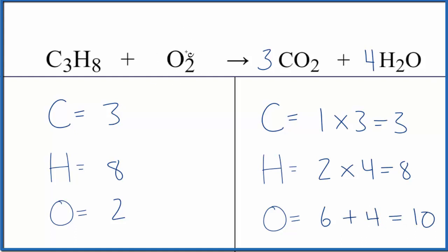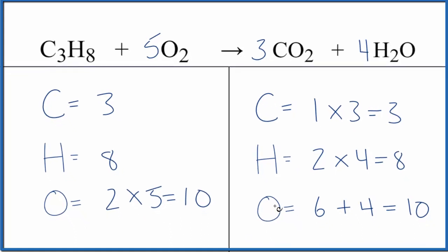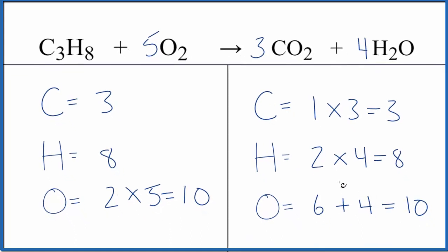And now we come over to our O2, put a five here, two times five. That gives us 10. And this equation is balanced.